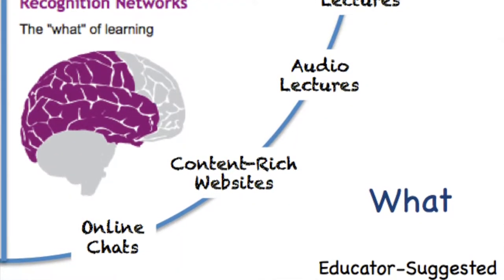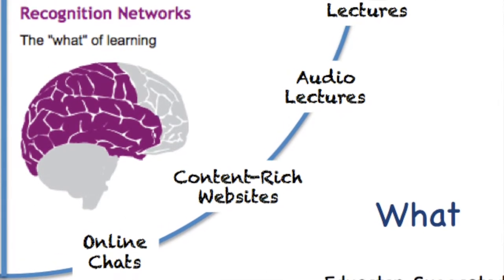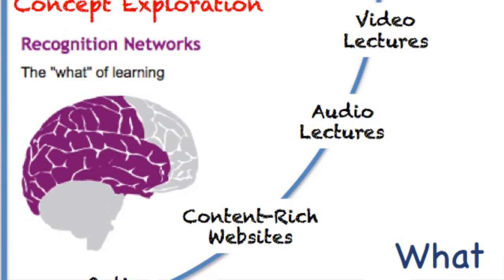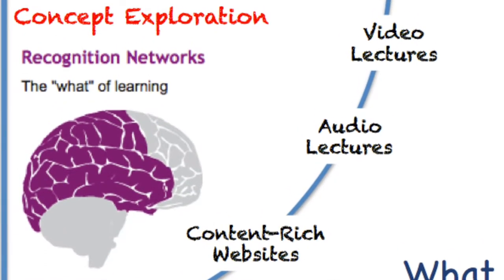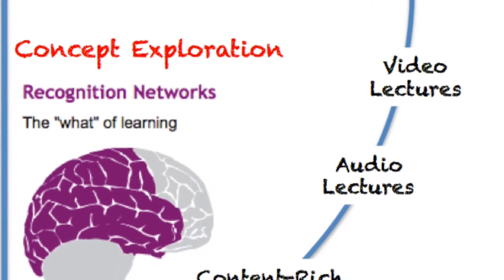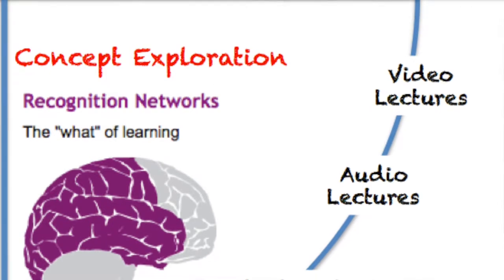When we think about the recognition networks at the back of the brain — the 'what' of learning — we have to accept as teachers that we must represent knowledge in different ways. Looking at MI and TFU, these provide a great road map for how you do that. If you're going to represent knowledge in different ways, you can't just lecture. You must, for example, show video clips — and James has some great examples of that — or use a podcast.